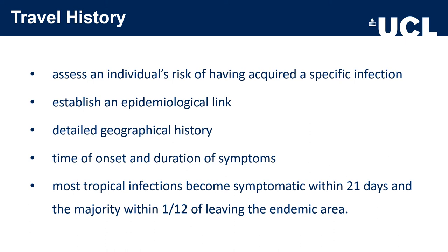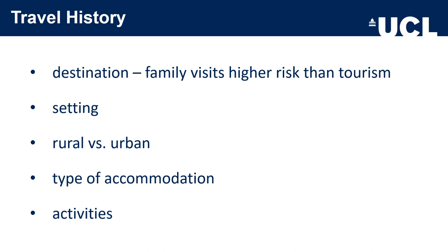You want to record the time of onset and duration of symptoms. Most tropical infections become symptomatic within about 21 days — three weeks — and the majority within a month of leaving the endemic area. It's important to record the destination, where the traveller was going, where they've been, and whether they made any stops or layovers. Family visits actually pose a higher risk of contracting a traveller's infectious disease than tourism, partly because you spend much more close contact time. Tuberculosis, spread by coughing as an airborne pathogen, is a good example of this.